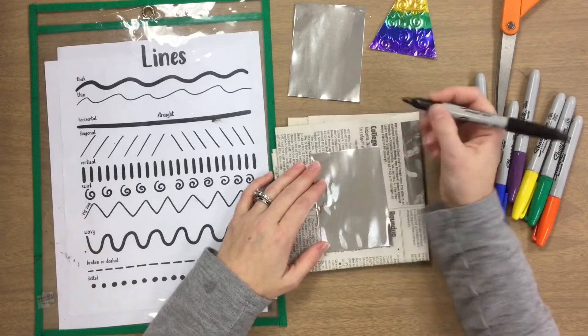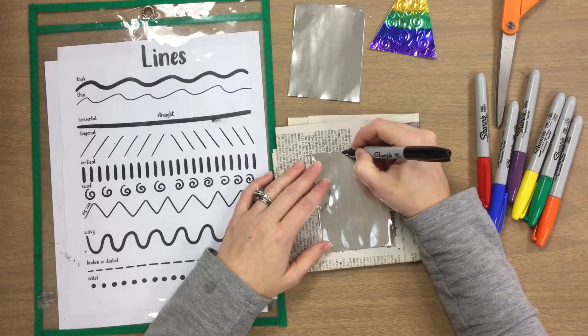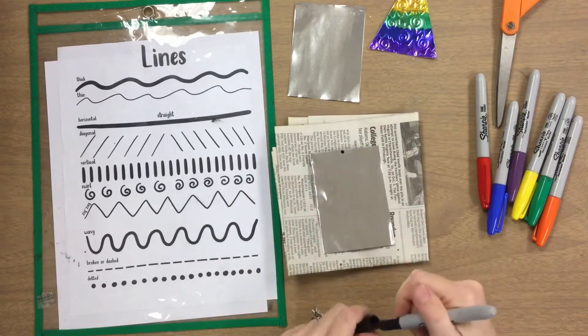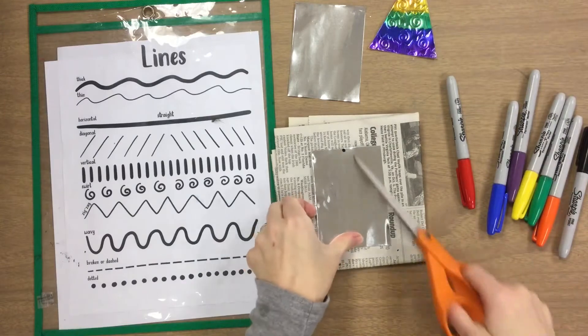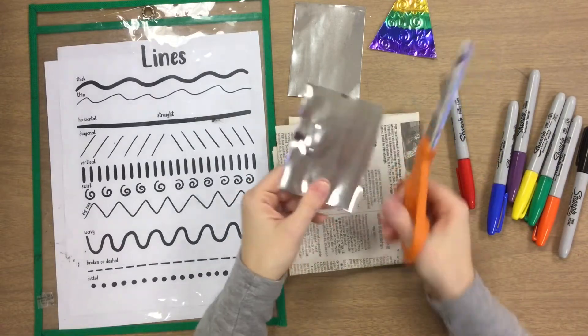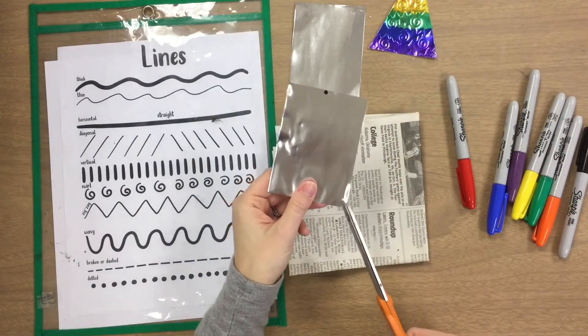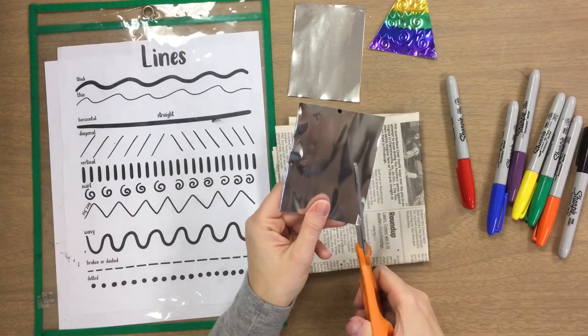You're going to try to find the middle of the top of your rectangle and make a dot. Then from the corner of the bottom, the opposite side from the corner, you're going to cut from that corner up to that dot.